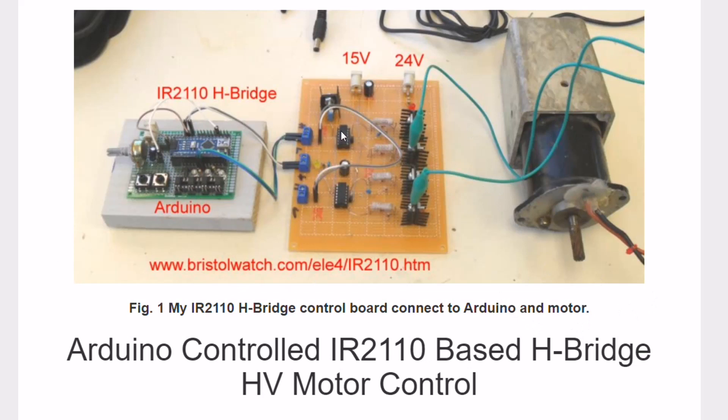The two IR2110s are these two integrated circuits here. These are four N-channel MOSFETs. This is 12-15 volts which can operate the Arduino if you add a 5-volt regulator and it also supplies the gate voltage for the MOSFETs. And the MOSFET voltage with this device can be up to 500 volts.